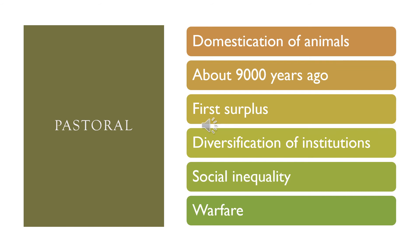There was also a religious class and various different institutions, along with increased social inequality as more and more people were released from the production of food. Warfare also increased as they needed land in order to raise the animals and have the products of the animals to maintain that surplus.